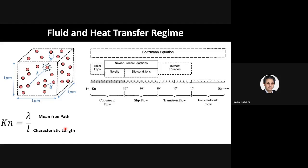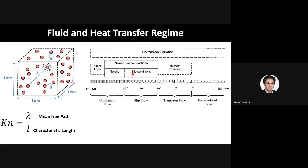Based on this Knudsen number, we can divide fluid flow and heat transfer into different regimes. You can see the classification here: for continuum flow, we can solve the Euler equation or Navier-Stokes equation. Even for slip flow, we can use the Navier-Stokes with a slip boundary condition. When it comes to the free molecular flow regime, the heat transfer and fluid flow can be dealt with using the collisionless Boltzmann equation — a form of the Boltzmann equation where we omit the collision part.